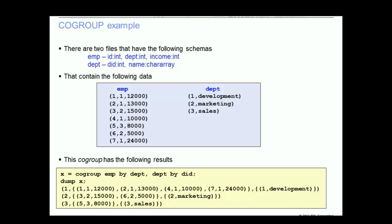The second tuple would have a value of 2, and then a bag which contains two tuples: one with a value of 3, 2, 15000, and the second with a value of 2, marketing.